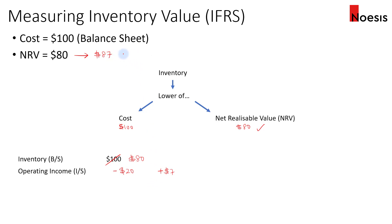If in a subsequent year the NRV rises to $105, there is an appreciation of $18. However, we've already recognized $7, so we can only reverse $13 more — not the full $18 increase. You cannot recognize more gain than what was originally written down.